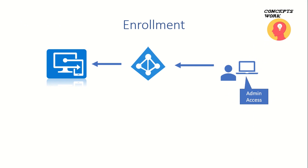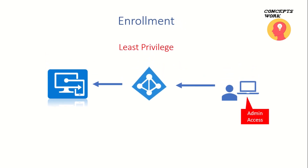Step one: as a user, I should be signing in to my laptop with admin access so that I can get the device enrolled. Step two: the Azure AD account that I will use to get the device enrolled will also get admin access on this particular machine. But if we talk about the concept of least privilege, this configuration is not adhering to typical standards. What I mean is that if I'm using my Azure AD account as a user and trying to enroll my device, my account is getting admin access on that machine.